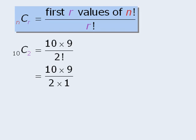Next we will expand 2 factorial, and we can now simplify this to be 45. So we can select two objects from a group of 10 objects in 45 different ways.